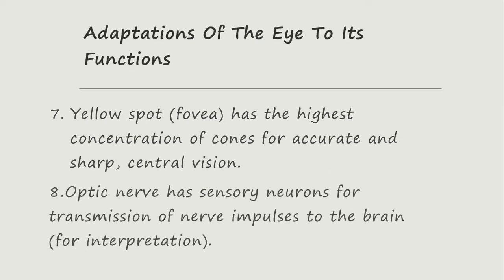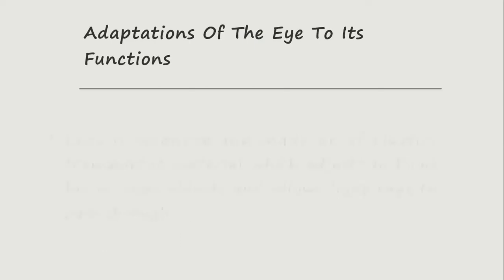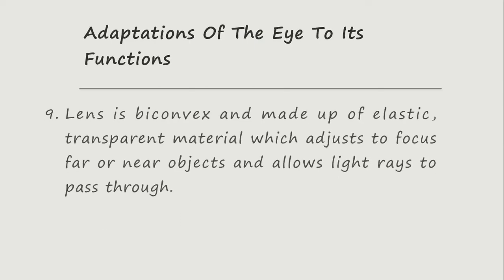The optic nerve contains sensory neurons for the transmission of nerve impulses to the brain for interpretation. The lens is biconvex and made up of an elastic transparent material, which adjusts to focus far or near objects and allows light rays to pass through.